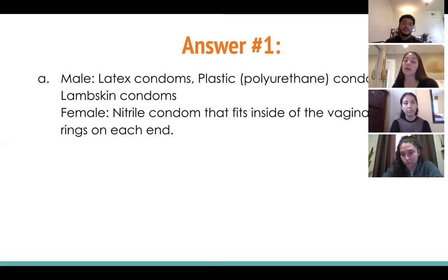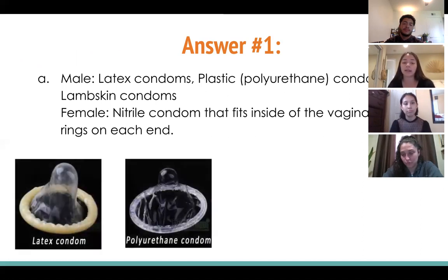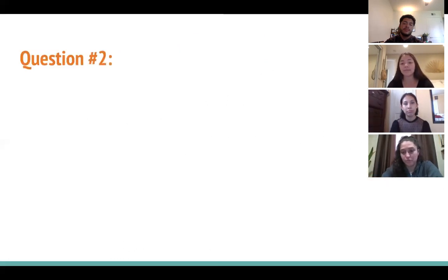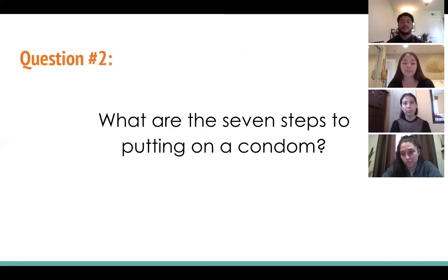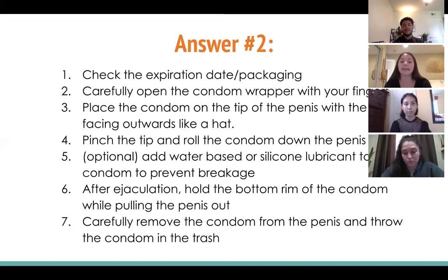Female condoms are the nitrile condoms that fit inside the vagina and have rings on each end. We put some pictures up so you can better get an idea of what each looks like. Question two: what are the seven steps to putting on a condom? Try your best and remember the most important ones — about condoms breaking and what to do and what not to do.